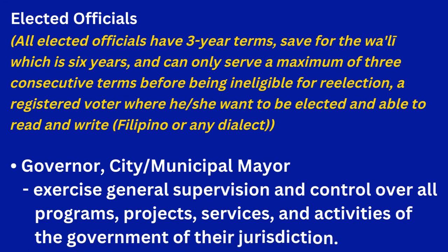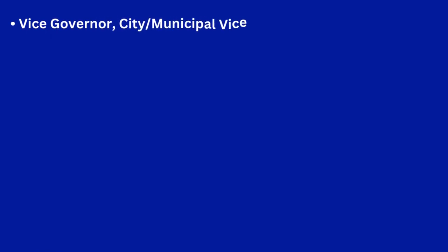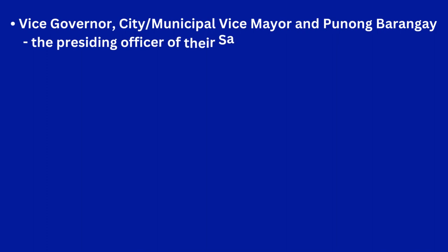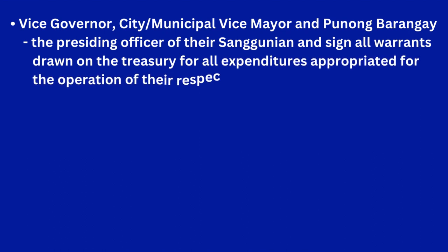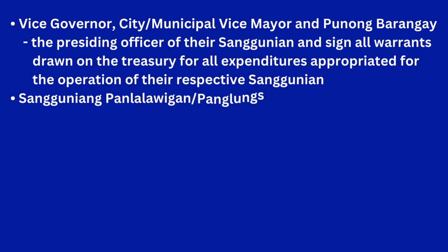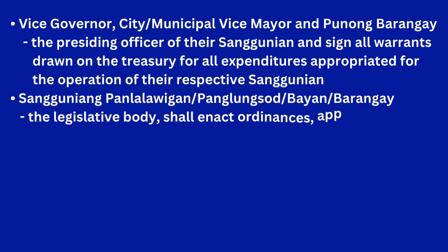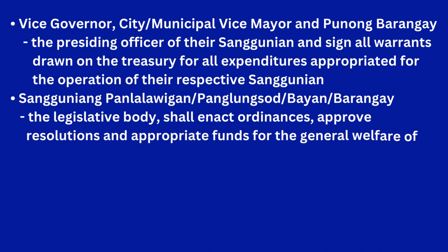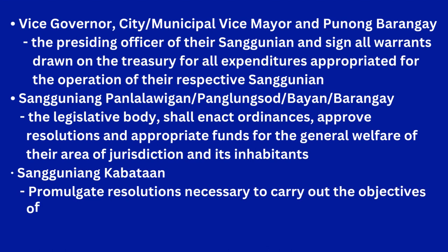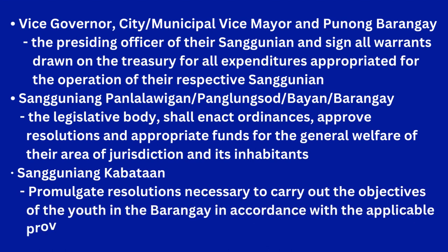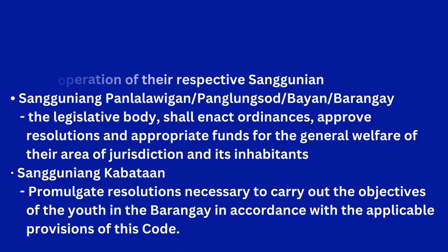For the local chief executive — the governor, city, or municipal mayor — their function is to exercise general supervision and control over all programs, projects, services, and activities of the government within their jurisdiction. The Vice Governor, City or Municipal Vice Mayor, and Punong Barangay serve as the presiding officer of their Sanggunian and sign all warrants drawn on the treasury for expenditures appropriated for the operation of their respective Sanggunian. The Sanggunian Panlalawigan, Panglungsod, Bayan, or Barangay serves as the legislative body: it shall enact ordinances, approve resolutions, and appropriate funds for the general welfare of their area of jurisdiction and its inhabitants. The Sanggunian Kabataan shall promulgate resolutions necessary to carry out the objectives of the youth in the barangay in accordance with the applicable provisions of this code.